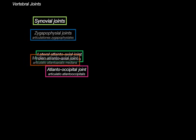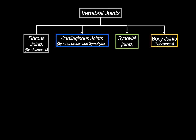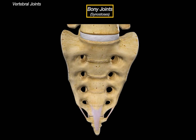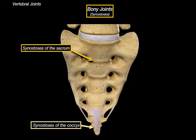Finally, the last category: bony joints, or synostosis. Bony joints represent the complete fusion of bones with no remaining joint cavity. In the vertebral column, the best examples are the synostosis of the sacrum and coccyx. During development, the individual sacral and coccygeal vertebrae are separated, but they later fuse into a single sacral bone and coccygeal bone.